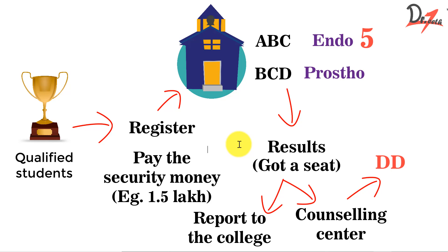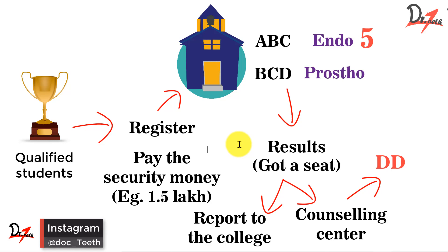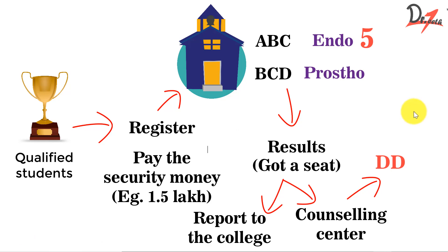Many colleges will promise you many things before you take admission. Always make sure you take that in a written format — get their consent for whatever they promise you in writing and have proof. Once you deposit the DD at the counseling center, congratulations, you have got the admission. You then visit your college for formalities, fill forms, provide photographs, and they may ask you to deposit a security money to the college. If you did BDS from the same college and have a receipt, ask them to adjust the new security money against what they have not refunded you yet.